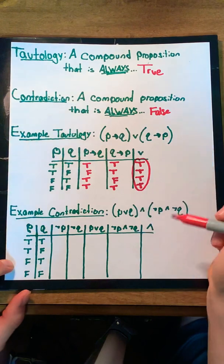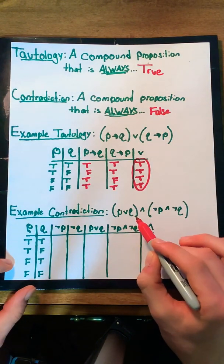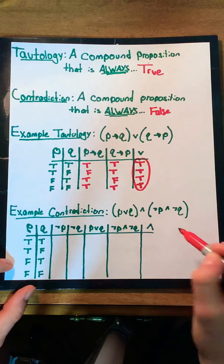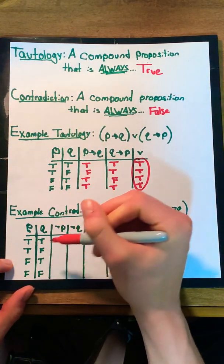Now let's do a quick example contradiction. We have the statement p or q, and not p and not q. Again, I've set up the truth table, giving assignments to p and q.